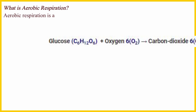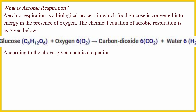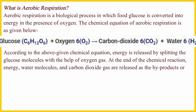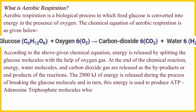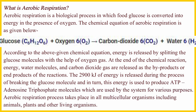Aerobic respiration is a biological process in which food glucose is converted into energy in the presence of oxygen. The chemical equation of aerobic respiration is as given below. According to the chemical equation, energy is released by splitting the glucose molecules with the help of oxygen gas. At the end of the reaction, energy, water molecules, and carbon dioxide gas are released as the byproducts or end products.